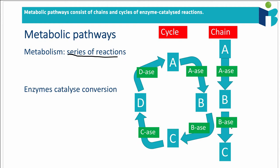So A is converted by A-ase into B, and then B is converted by B-ase into C. So just kind of like a model. And so this is called a chain because one thing links to the next which links to the next, but then the final product is different from the original substrate.